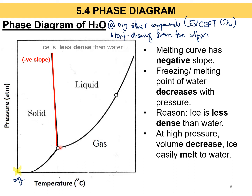You start from the origin and go straight up. This point here — this is the triple point, which we already learned. The important points when drawing a phase diagram are the triple point and the critical point. Beyond the critical point is the supercritical region. So: origin to triple point, then to critical point. The key difference between the phase diagrams of H2O and CO2 is their melting curves.